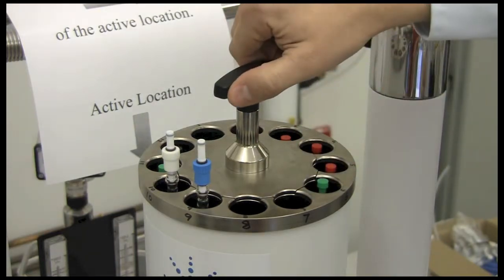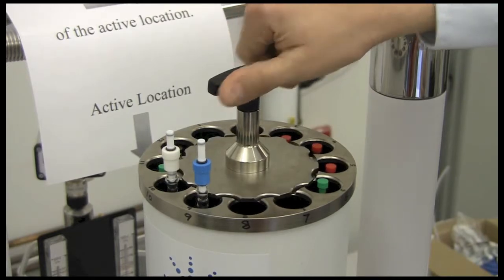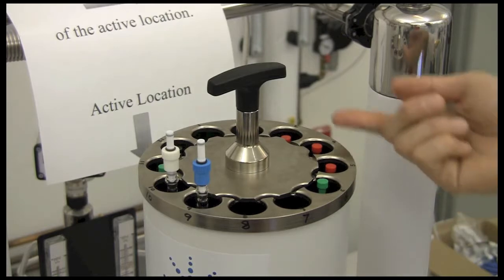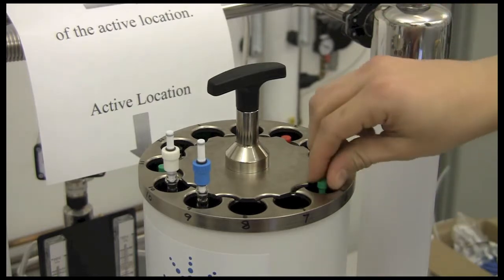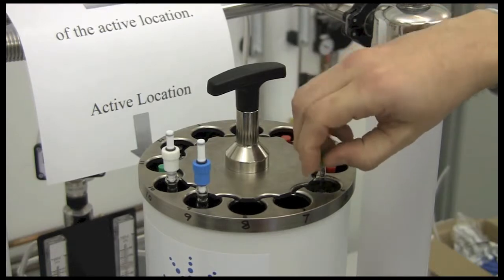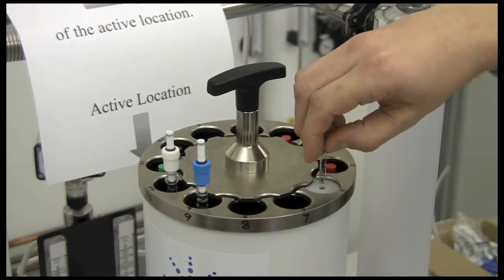Then you should return the carousel back to the locked position or the capture position. The reason for the capture position is that sometimes when the sample ejects, it can either pop up too far or it will bounce up and down, and this tab prevents it from doing that.